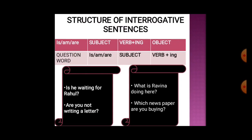The second type of interrogative begins with a question word, then 'is', 'am', or 'are', then subject, then present participle. For example: Is he waiting for Rahul? Are you not writing a letter? What is Raveena doing here? Which newspaper are you buying?